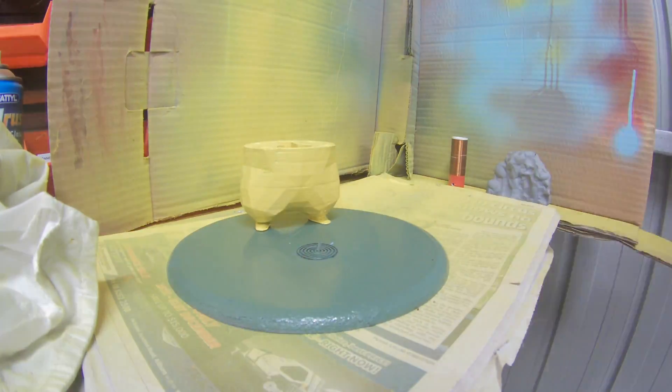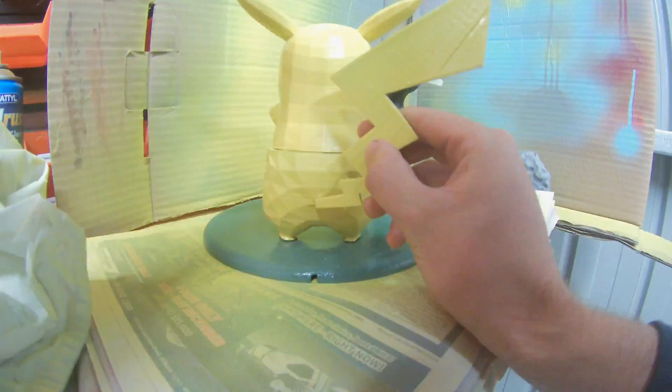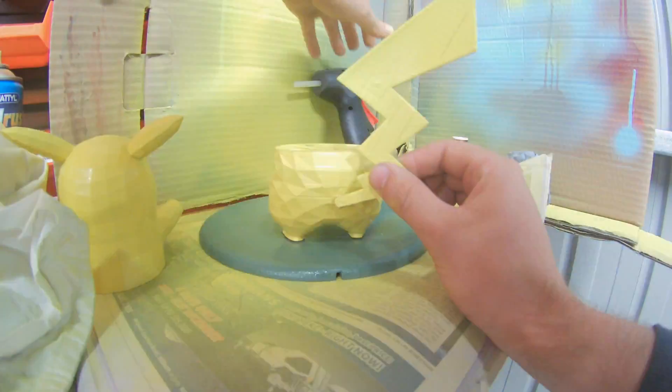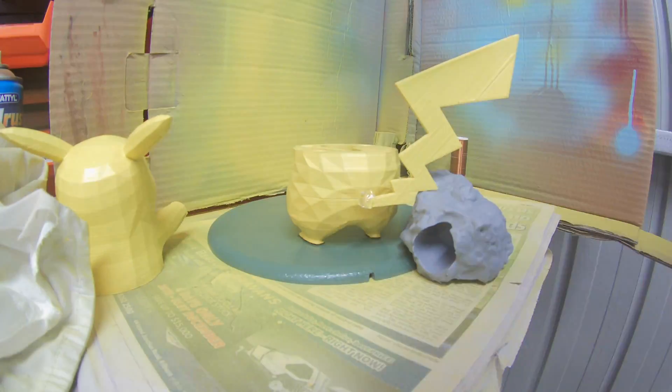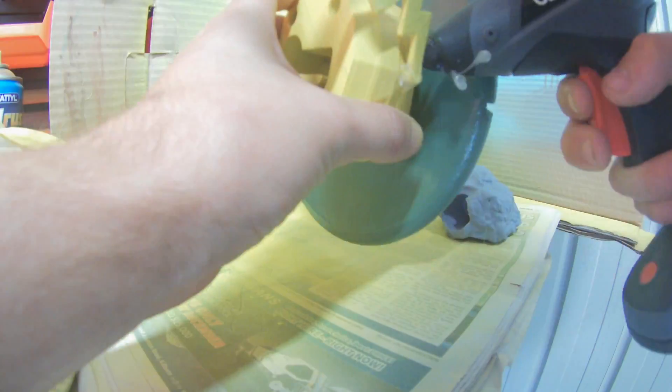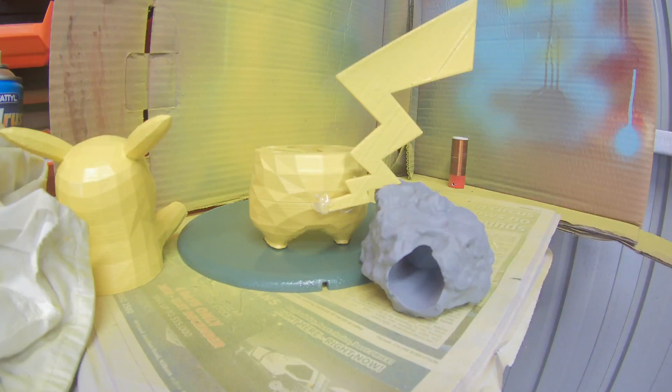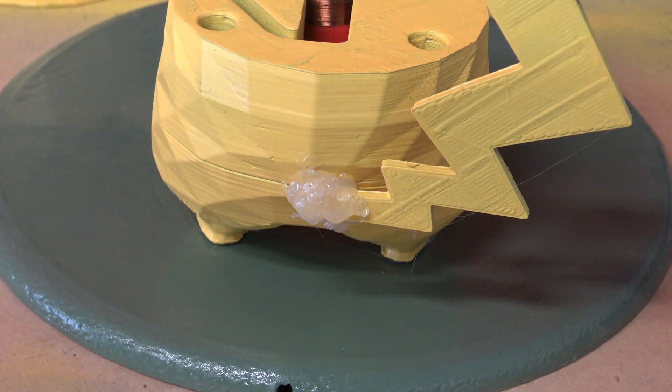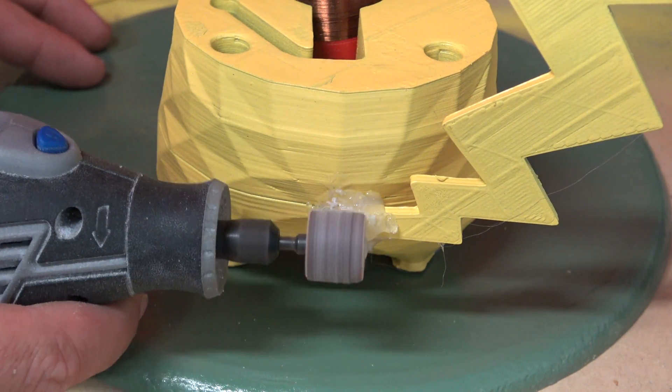Now we need to glue the base and the legs together and also the tail on the back of Pikachu. I ended up using hot glue, hot glue is a messy method, epoxy would probably work better but I was too lazy to do that. The hot glue as you can see here I did give it a light sand but in the end once we paint it up it won't look too bad.